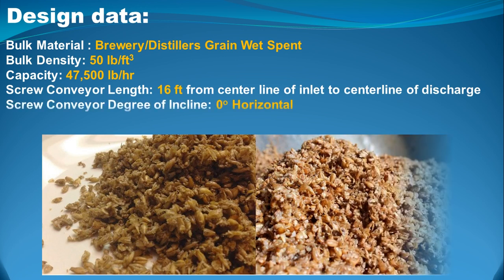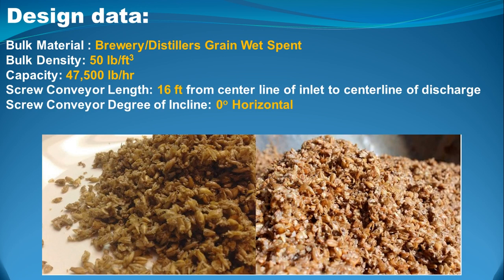The given data: the type of material is brewery distillers grain (spent), with a density of 50 pounds per cubic feet. The capacity needed for the screw conveyor is 47,500 pounds per hour, with a length of 16 feet from centerline of inlet to centerline of discharge. The degree of incline is zero degrees — horizontal.